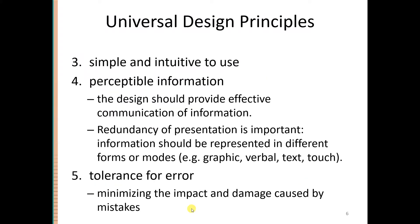The next universal design principle is Simple and Intuitive to Use. We should design the system so that it is not very complex. Intuitive to use means that when we are looking at the interface, we should have an idea of how to use the system. For example, radio buttons tell us we can check one option and they are mutually exclusive, while checkboxes indicate we can choose multiple options. By looking at the interface — whether software or hardware — the user should have some idea of how to use it.